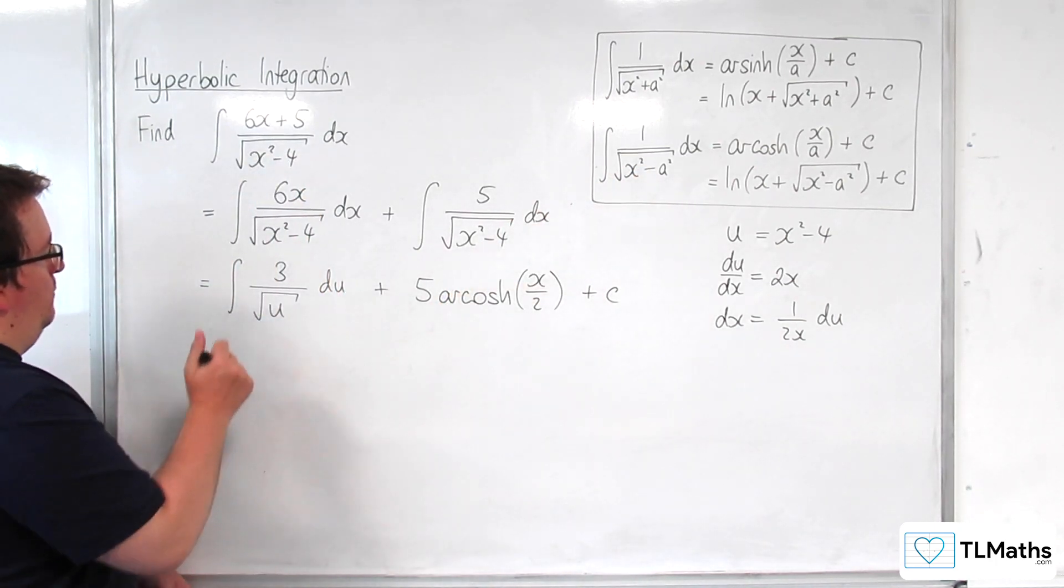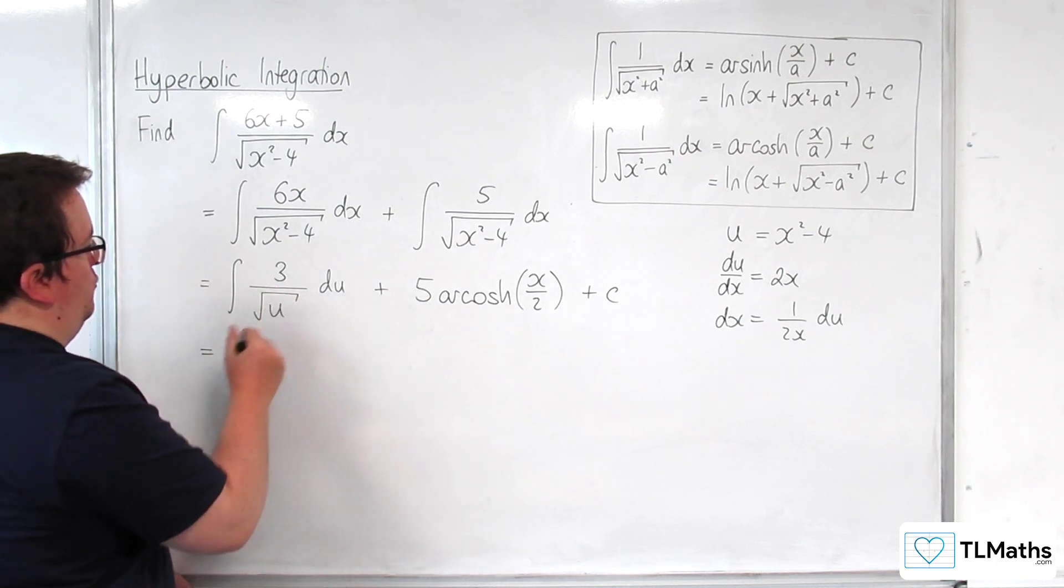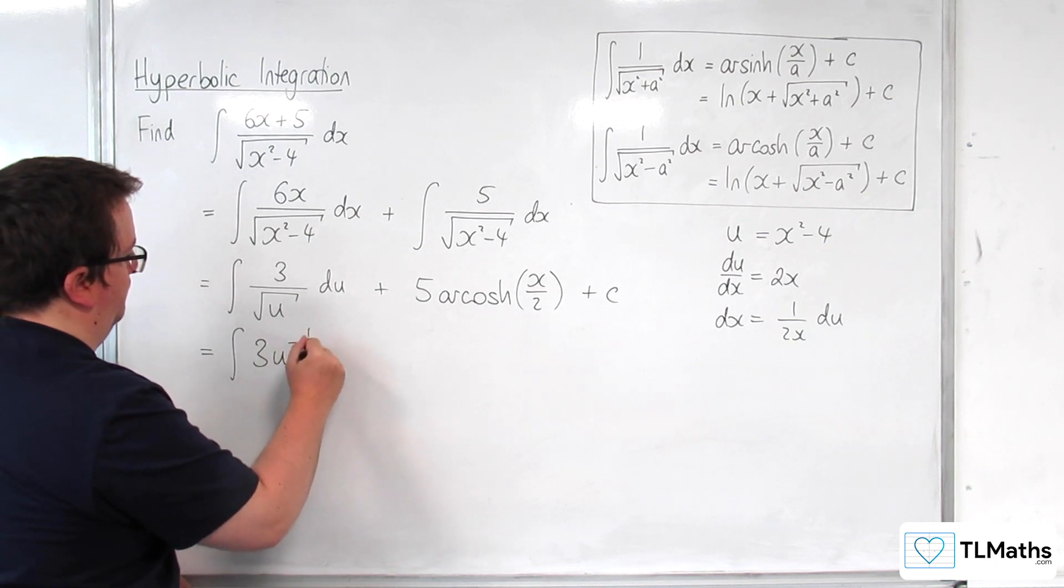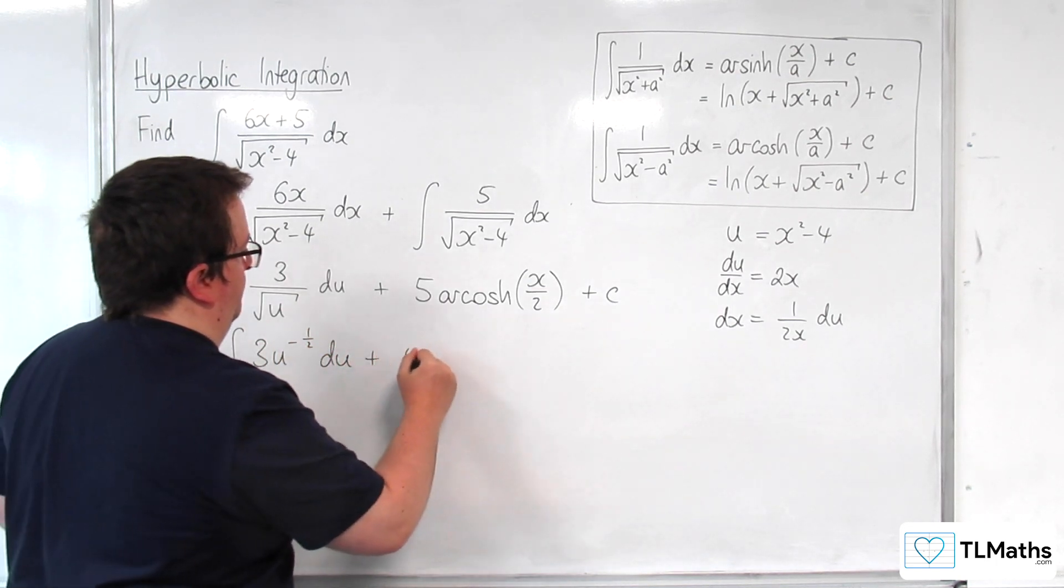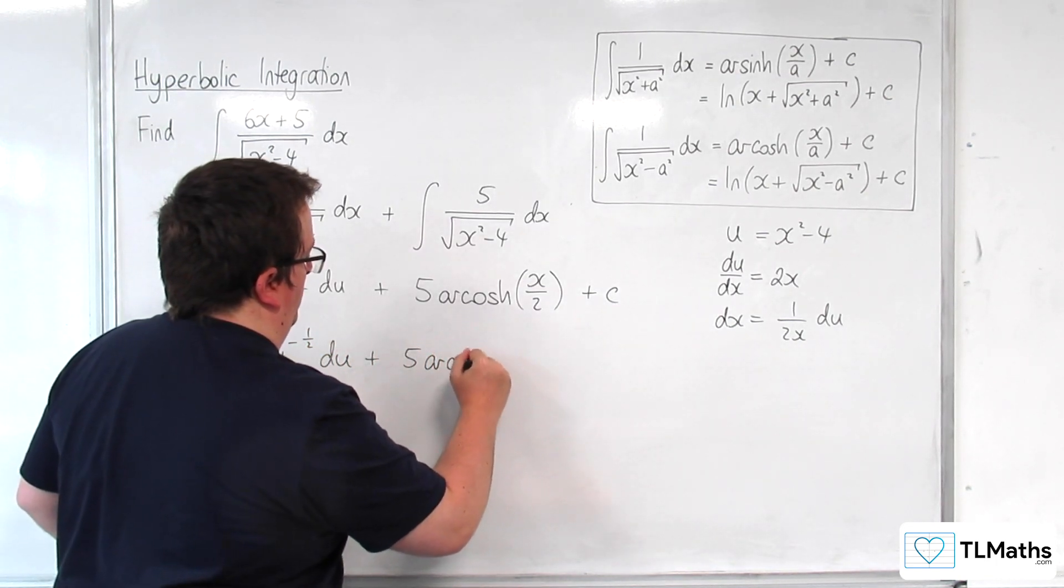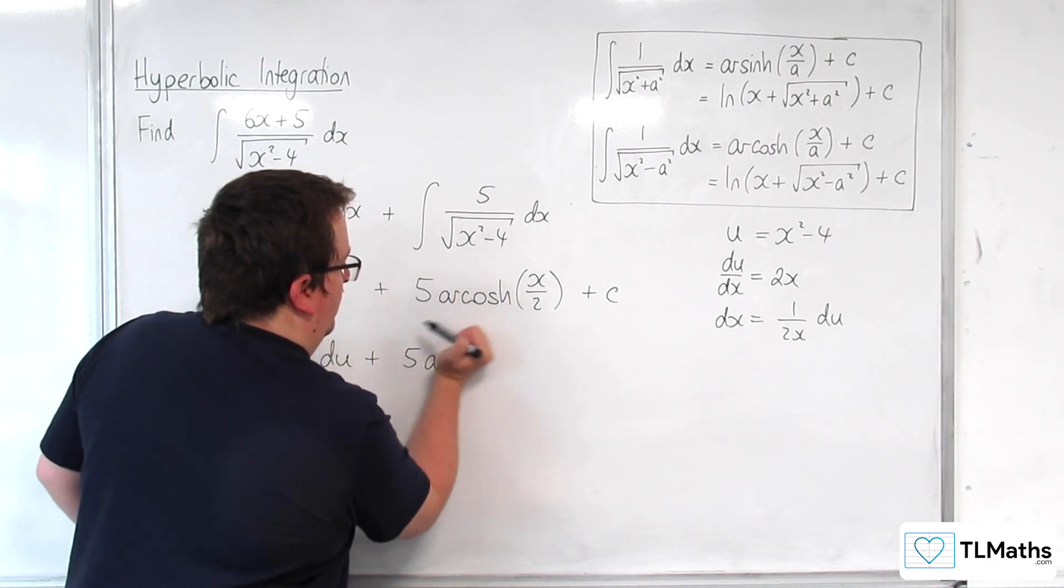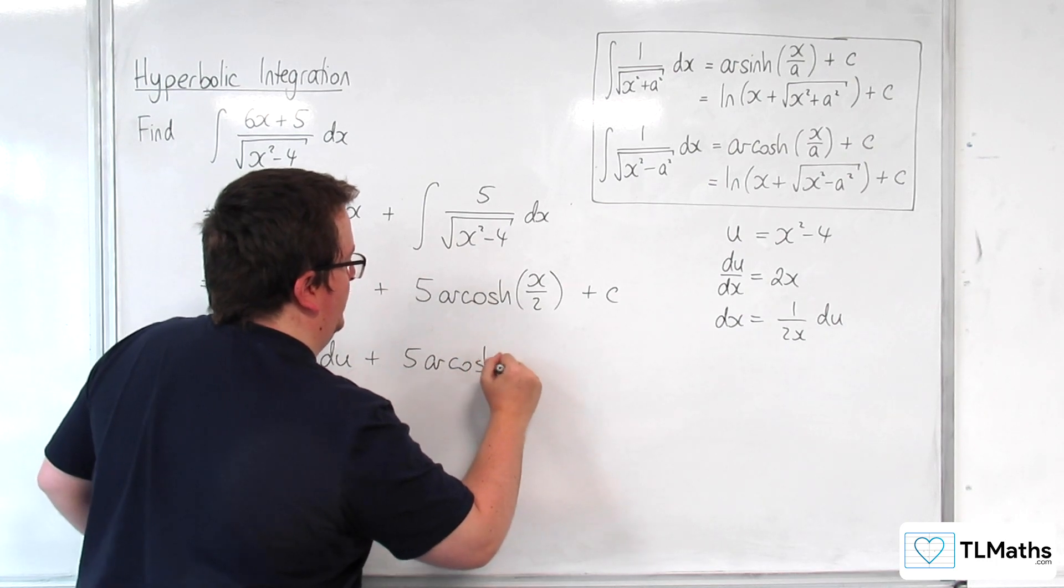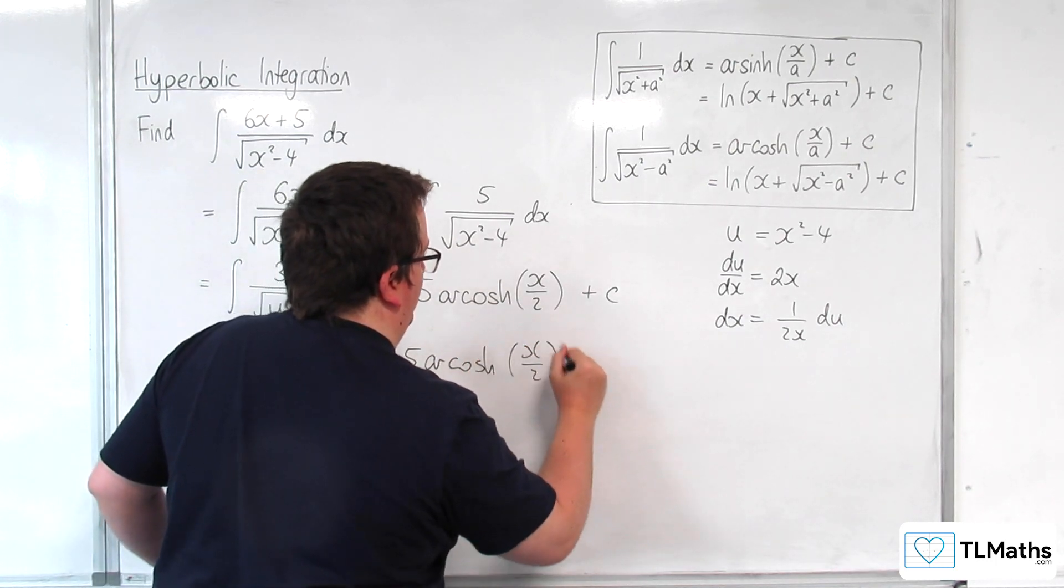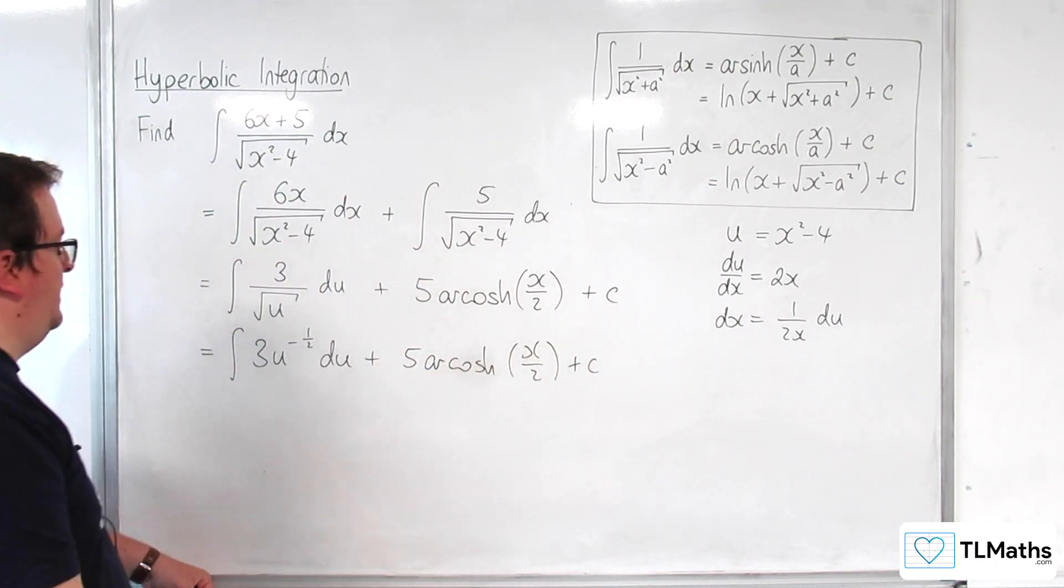So this here we've got the integral of 3u to the minus 1 half. Oh dear, made the mistake of going for arc didn't I? Oh gosh, x over 2 plus c. Easy mistake to make.